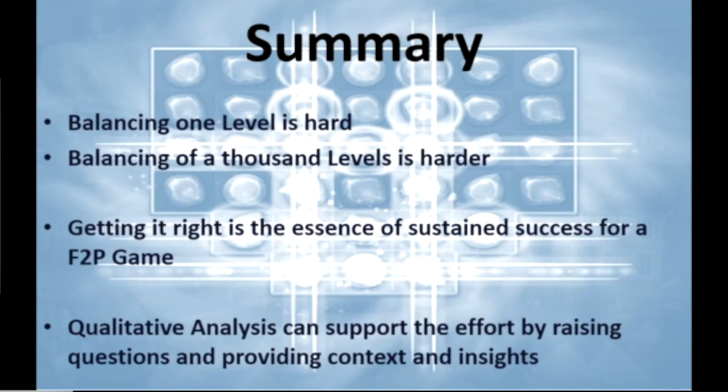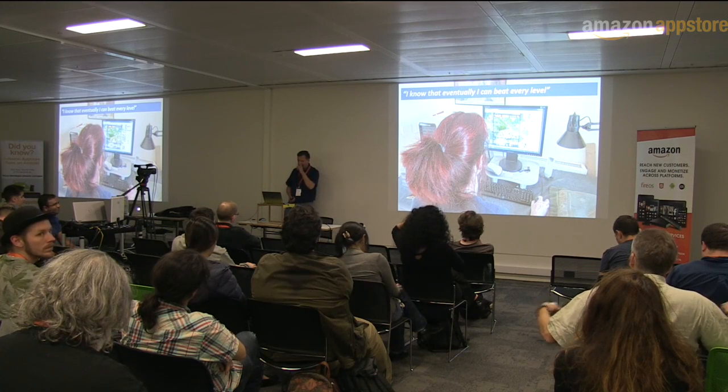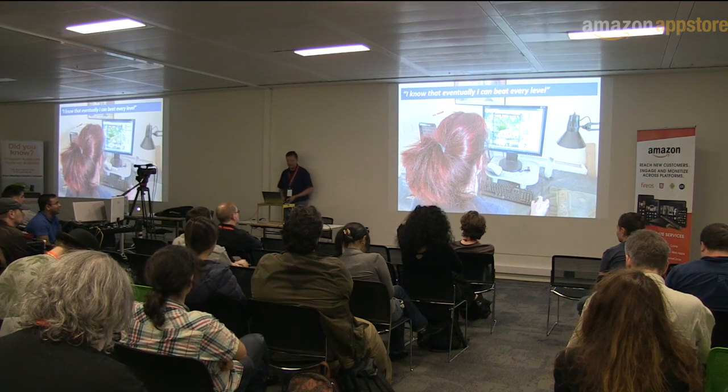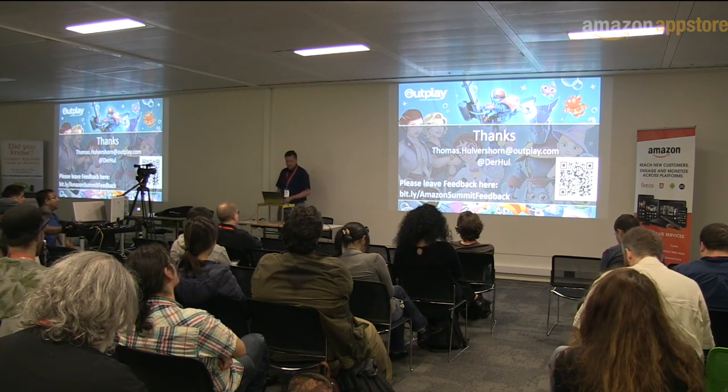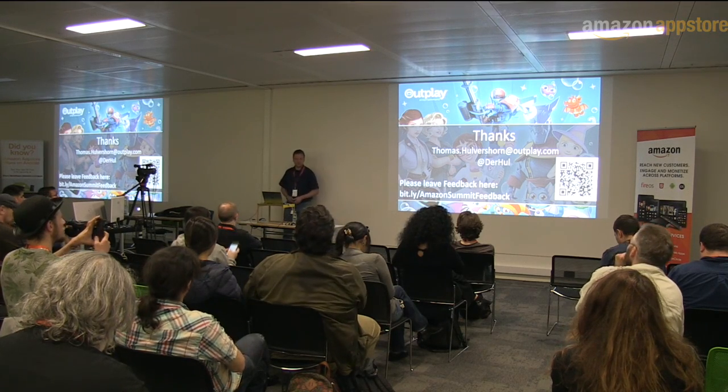So summary. Balancing one level is hard, balancing a thousand levels is harder. Getting it right is the essence of being a successful game studio if you're in the casual space. And qualitative analysis is just a very good way, from my point of view, to see, to feel data, and to create stories that you can explore and objectify with quantitative analysis. So I asked my wife, why do you like playing these games? She literally spent nearly a year on one level. I couldn't believe it. It's like, well, I know that eventually I can beat every level. That's what we do in our games, the studio. We make sure that people enjoy our games. So thank you very much for listening and for being here. There's this QR code, a bit smaller than the other presentations, but please leave feedback. Hopefully you win something. And thanks for your attention.